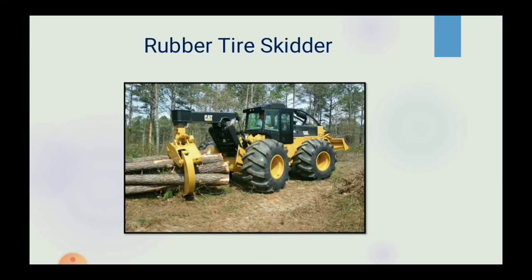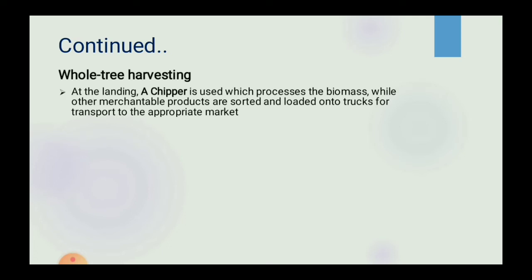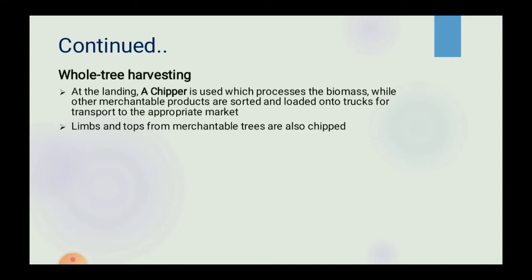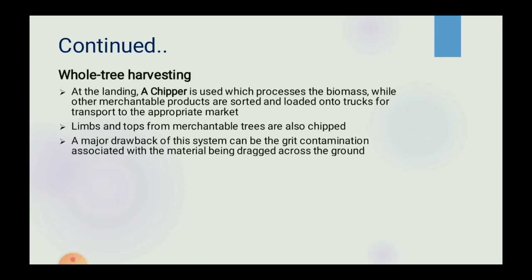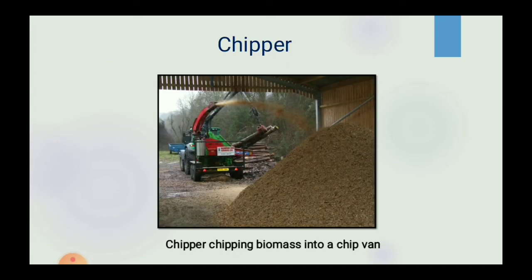At the landing, a chipper is used which processes the biomass while other merchantable products are stored and loaded onto trucks for transport to the appropriate market. Limbs and tops from merchantable trees are also chipped. A major drawback of this system can be the grit contamination associated with the material being dragged across the ground.